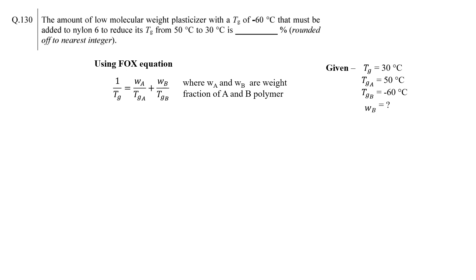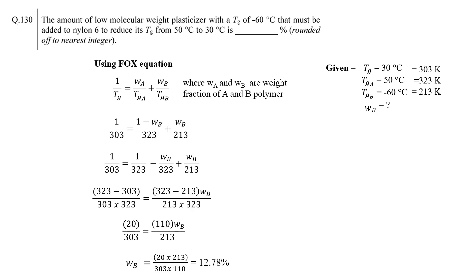We must make sure to convert temperature from Celsius to Kelvin. Now, putting these values into the equation and after simplification, we can see that addition of 12.78% plasticizer will reduce the glass transition temperature of nylon from 50°C to 30°C.